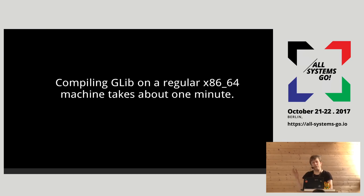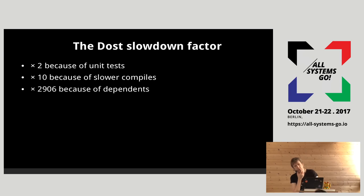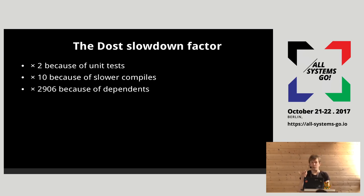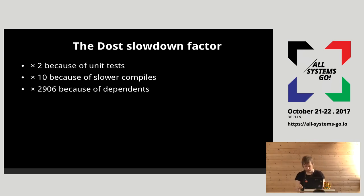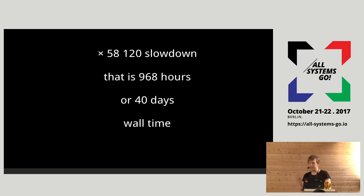Existing glib compiles on a regular machine in about a minute — a rough estimate. With DOST you get a 2x slowdown because these new compiling languages require you to compile your source code twice: once to get executables/libraries, and a second time with different flags so embedded unit tests get generated. Then it's about 10 times slower compilation speed. There are 2,906 direct dependents of glib in Debian. This is a slowdown factor of about 60,000, which comes to about 40 days of CPU compute time — actual wall time. A bit of a jump from one minute to 40 days.